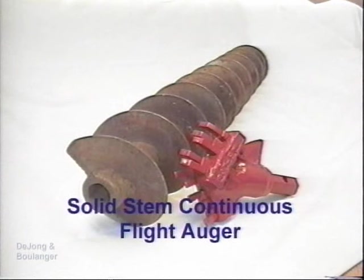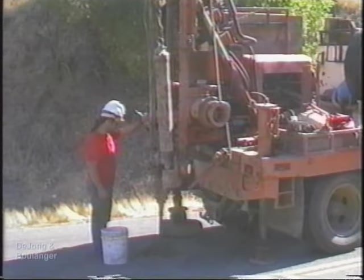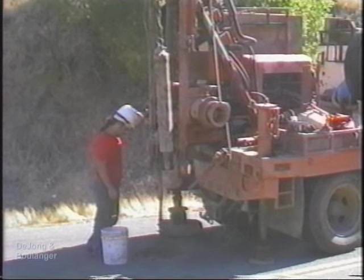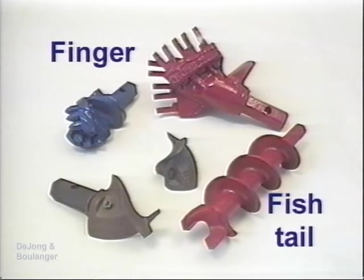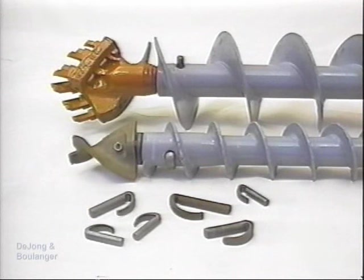The solid stem continuous flight auger method is the simplest drilling system with only two basic components: the drill bit and the auger flights. The drill bit is located at the tip of the drilling stem, with the stem consisting of individual auger flights connected together. When rotating, the drill bit cuts and loosens the soil, enabling the flights to lift the soil out of the hole. Variations of the two most common types of bits, the finger and fishtail, are pictured here. Flights of auger are typically five feet long and come in outside diameters ranging from four inches to 14 inches. The connections between the drill bit, auger flights, and drill head use male and female connections that are secured by auger pins.